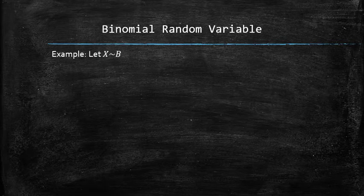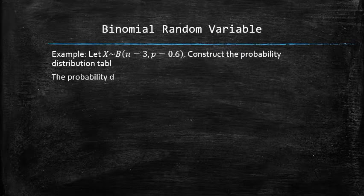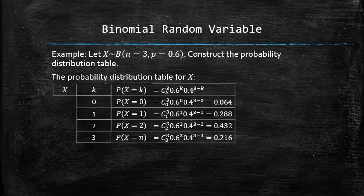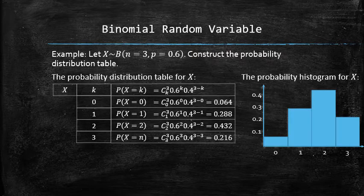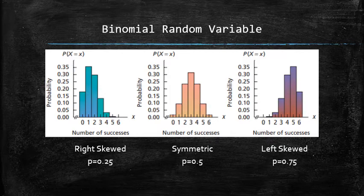For example, for a binomial random variable X with parameters N equals 3 and P equals 0.6, we construct the probability distribution table by replacing N with 3, P with 0.6, and K with every value from 0 to 3. Just like with any other discrete random variable, we can also create the probability histogram. A relation can be observed between the shape of the histogram and the value of P.